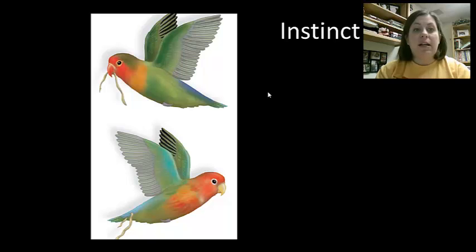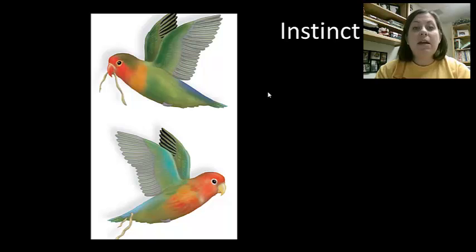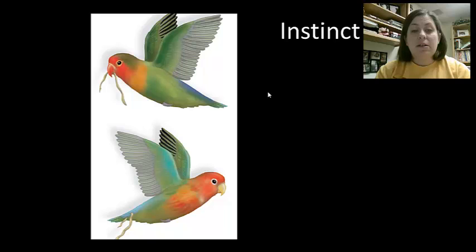These two species are closely related and they can interbreed. Their offspring actually show an intermediate, getting medium-length leaf pieces. The problem is, neither one is really efficient — they can only carry one at a time in their beak, but they still can't carry more than one in their tail. So even though they're intermediate and get medium-length pieces, they're not as successful as either parent species.